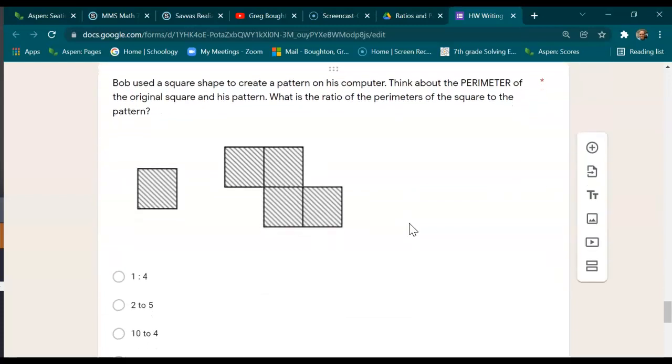Down here we're looking at perimeter also. So we're looking at the perimeter of this square and the perimeter of this shape here. You're doing the same thing, same idea, where you're counting the lines that make up the perimeter and comparing them in a ratio form.